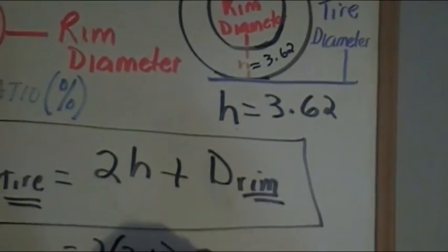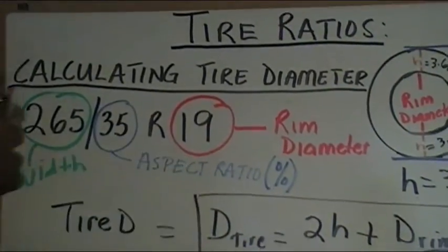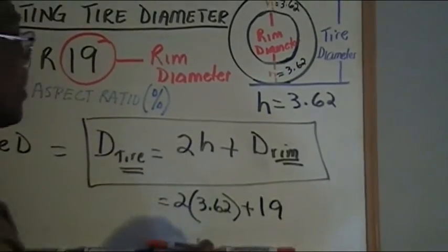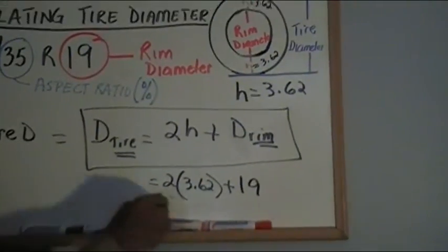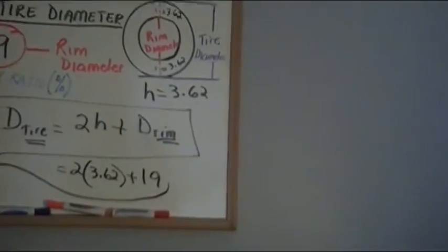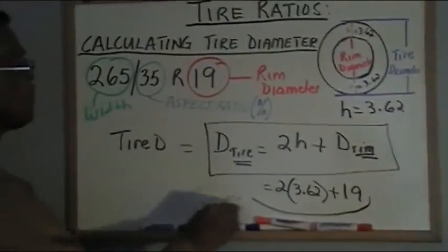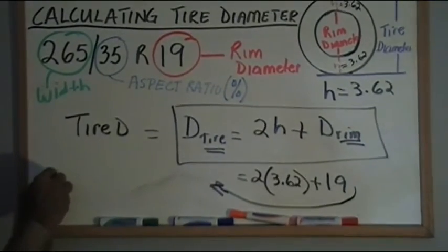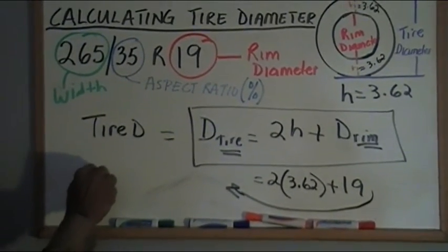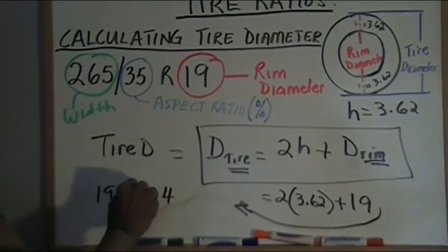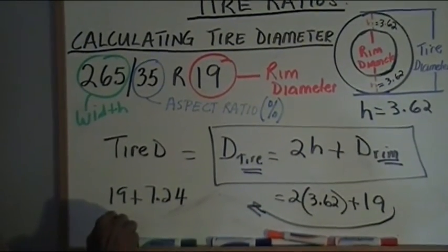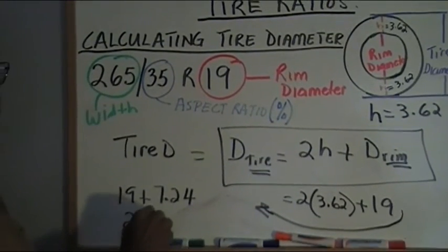Plus rim diameter 19. So that's gonna give me... let me bring this figure over here. That's 19 plus 7.24, so this is gonna be 26.24.